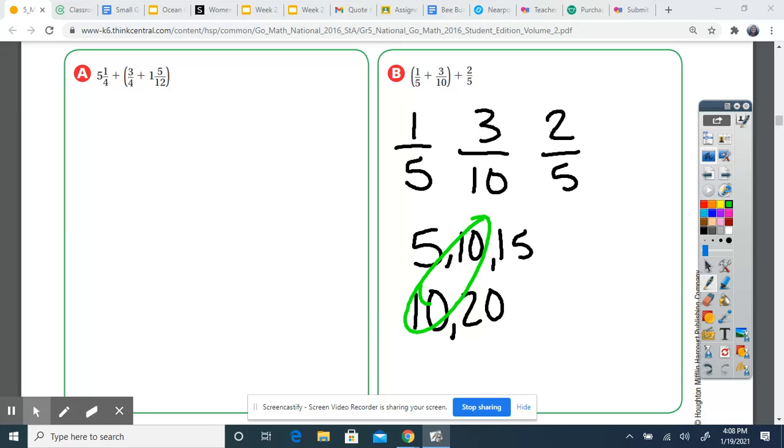And guys, if all three of these numbers had different denominators, we would list all three denominators for multiples. But since five and five is the same, we're just going to list our multiples of five once. So we know our LCD is ten.